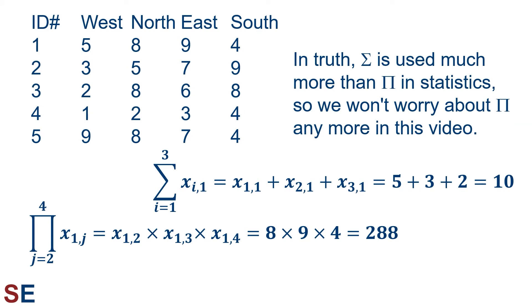Looking at this sum and product with our data table from earlier, we can see that the sum is x 1 comma 1 plus x 2 comma 1 plus x 3 comma 1, which is 5 plus 3 plus 2 equals 10. And the product is x 1 comma 2 times x 1 comma 3 times x 1 comma 4, which is 8 times 9 times 4 equals 288.